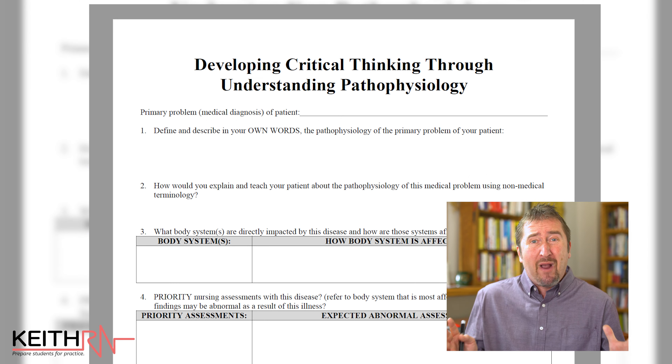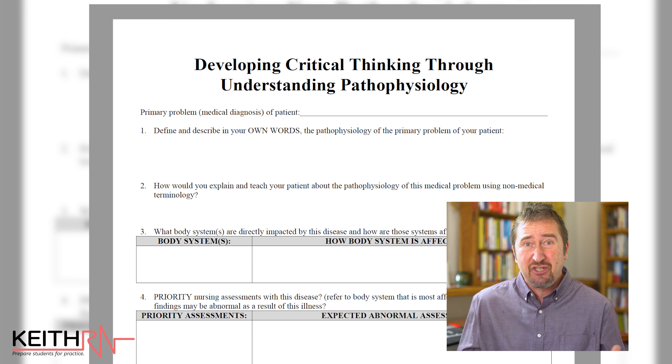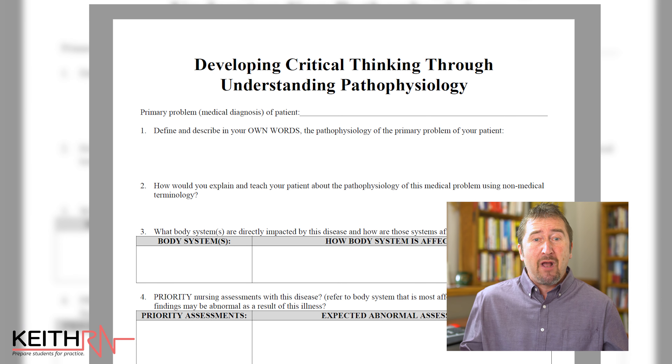The first two questions on this worksheet are: define and describe in your own words the pathophysiology of the primary problem of your patient. Students can memorize, but that doesn't mean they know and understand — this question forces them to put it in their own words. The second question is very practical: how would you explain and teach this problem to your patient if they were not medically oriented? How can you simplify it and bring it down to their level? That's an important nurse thinking skill, and it helps make pathophysiology real and relevant to clinical practice.